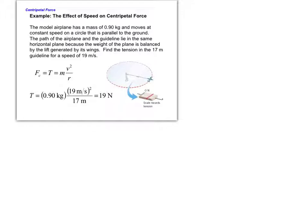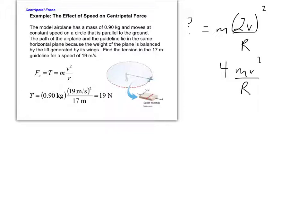Looking at how velocity impacts centripetal force: F_c = mv²/r, so the v term is squared. If you double the velocity while keeping radius and mass the same, you must quadruple the centripetal force, since (2v)² = 4v². Radius is inversely proportional to centripetal force linearly, whereas velocity has a squared relationship — whatever you do to velocity is magnified in the centripetal force.